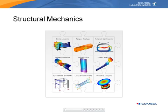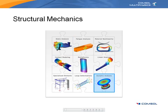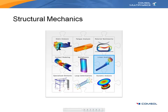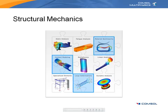The basic types of analysis used in solving structural mechanics problems are shown here. Static analysis is used when loads and constraints are at equilibrium. Dynamic analysis simulates time-dependent problems. Linear analysis is applied when material properties are linear elastic. Non-linear analysis includes the simulation of material non-linearities, large deformations, and contact.